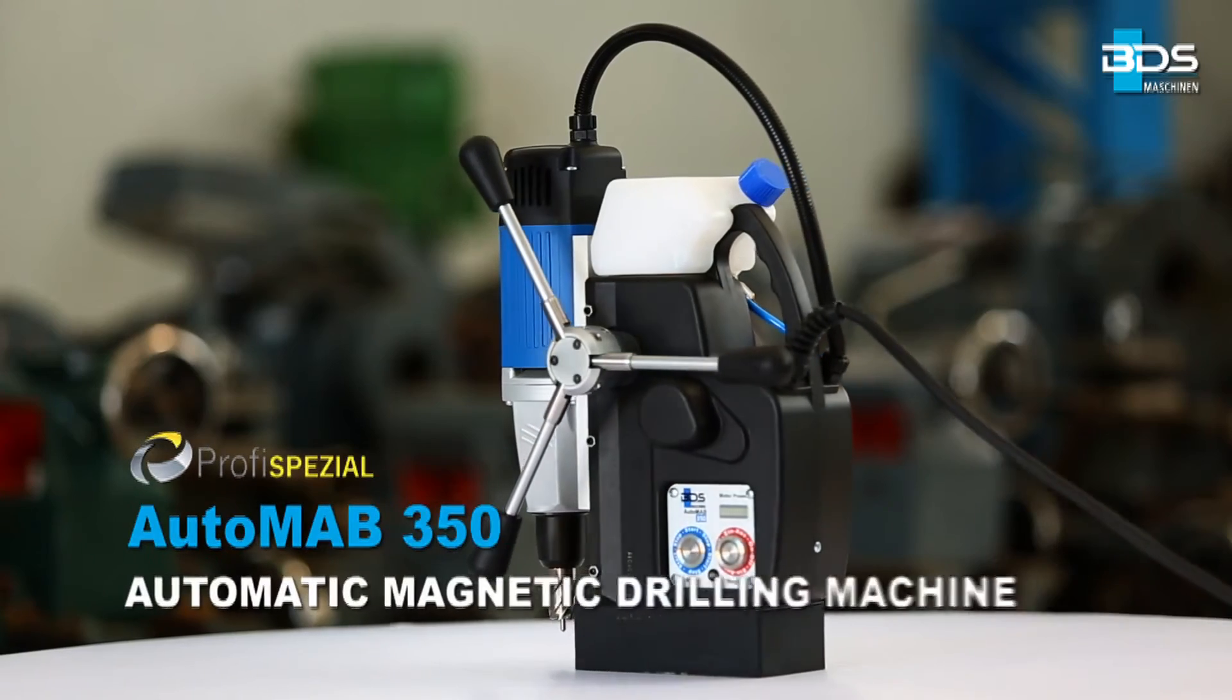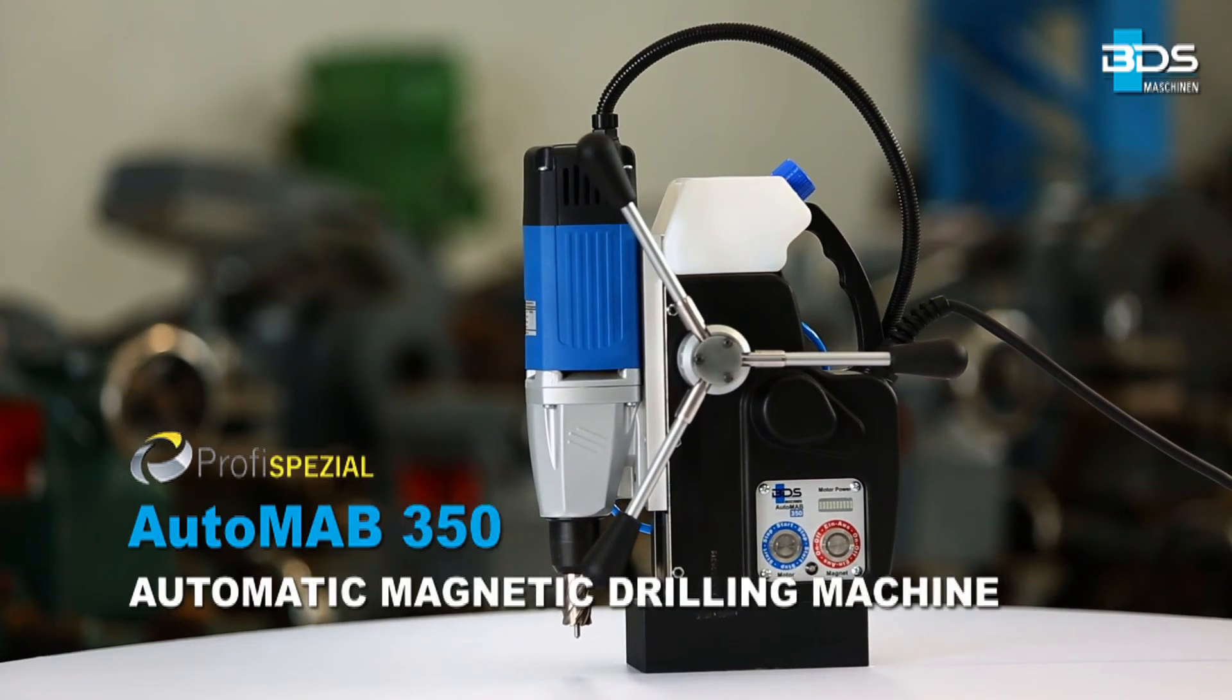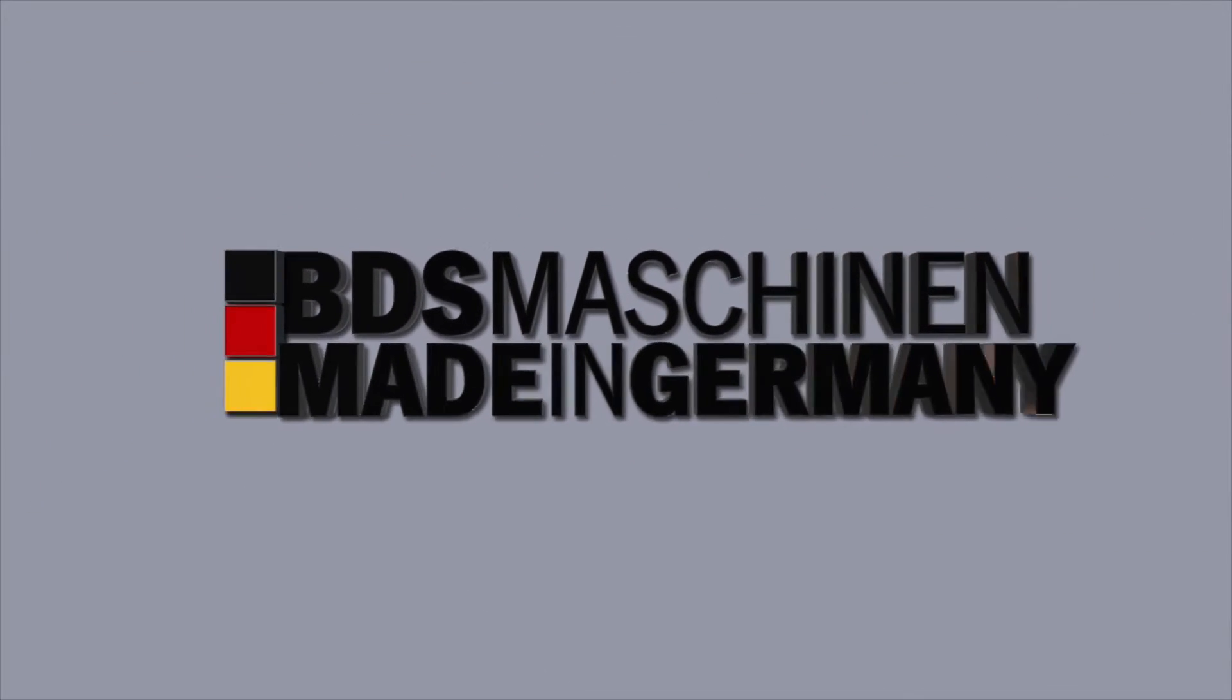The Automab 350: powerful, fast, and automatic magnetic drilling machine. Made in Germany by BDS Maschinen.